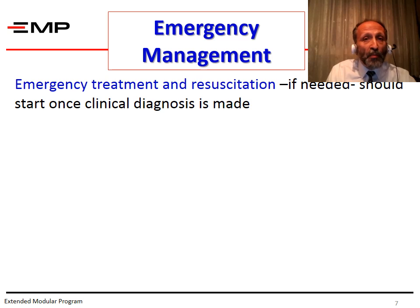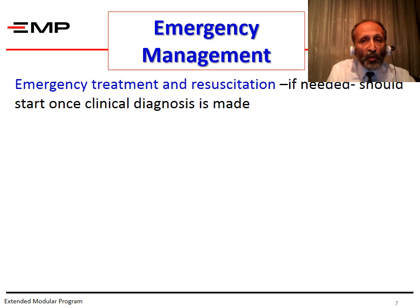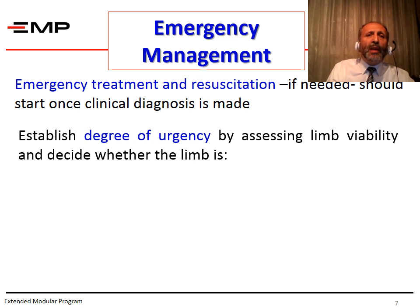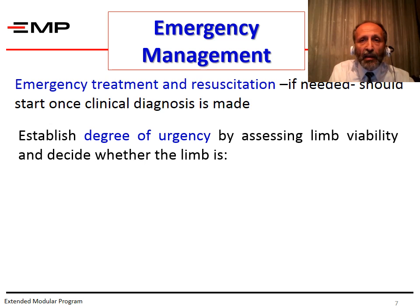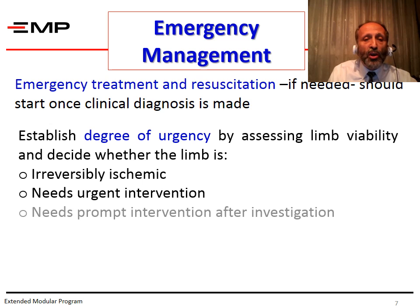As a junior member of the health provider team, you will be responsible to initiate this emergency treatment. Look for the initial management steps and be ready to discuss them in your face-to-face session. You should establish the degree of urgency by assessing limb viability and decide whether the limb is irreversibly ischemic, needs urgent intervention, or needs prompt intervention after investigation.